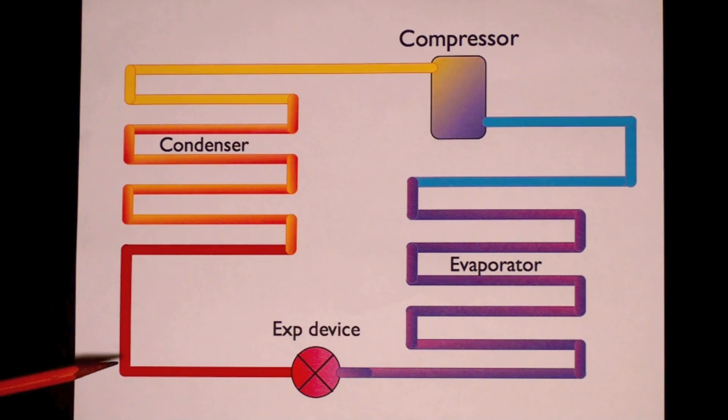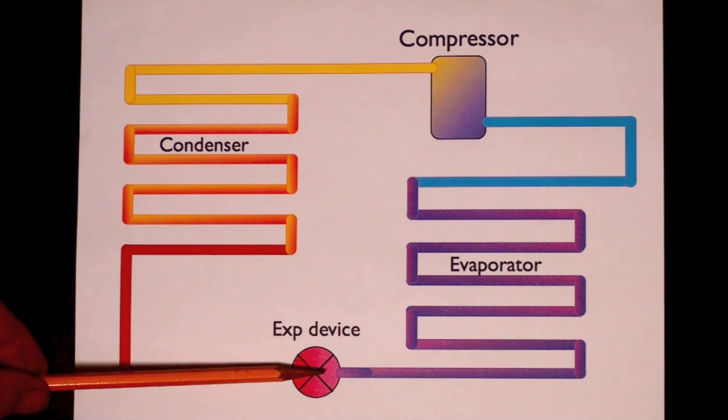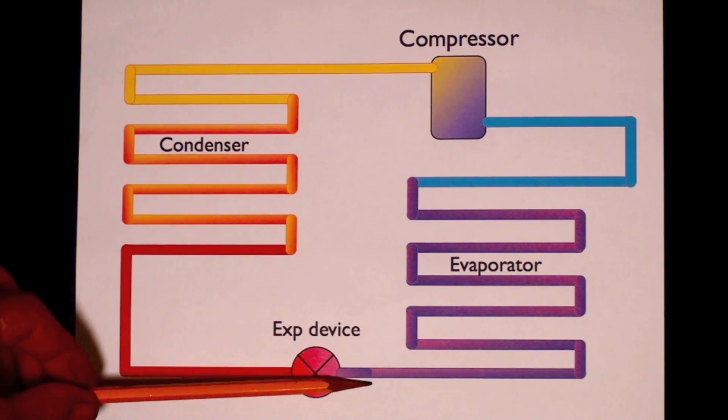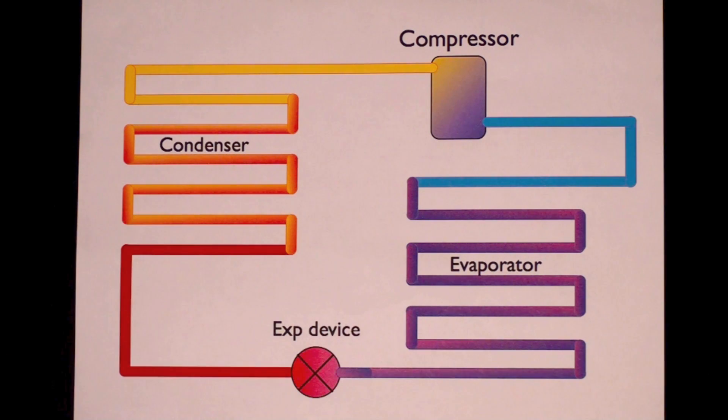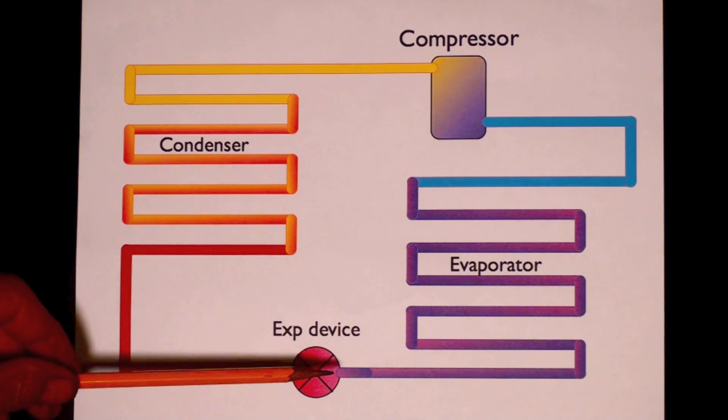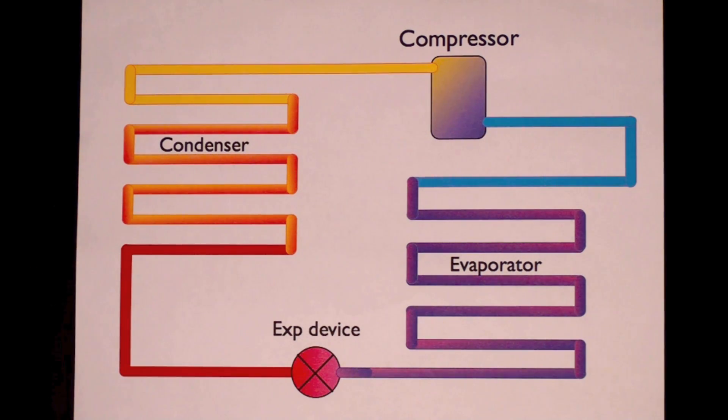So it passes through the liquid line, hits the expansion device, and then the expansion device, because it's a limiting device, it could be just a small hole, the pressure on this side is going to be much higher than the pressure on this side. So the refrigerant passes through here. Its pressure drops from the condensing pressure temperature to the evaporating pressure temperature.